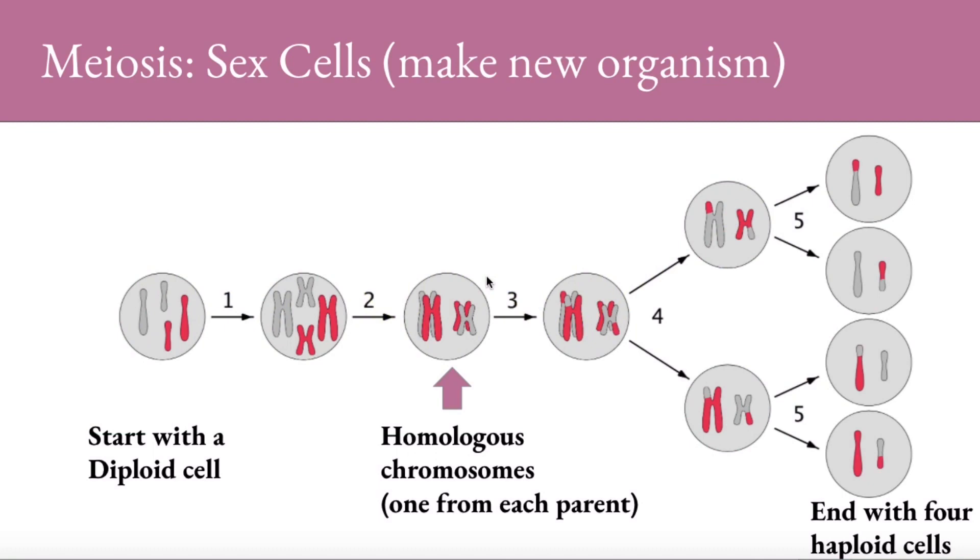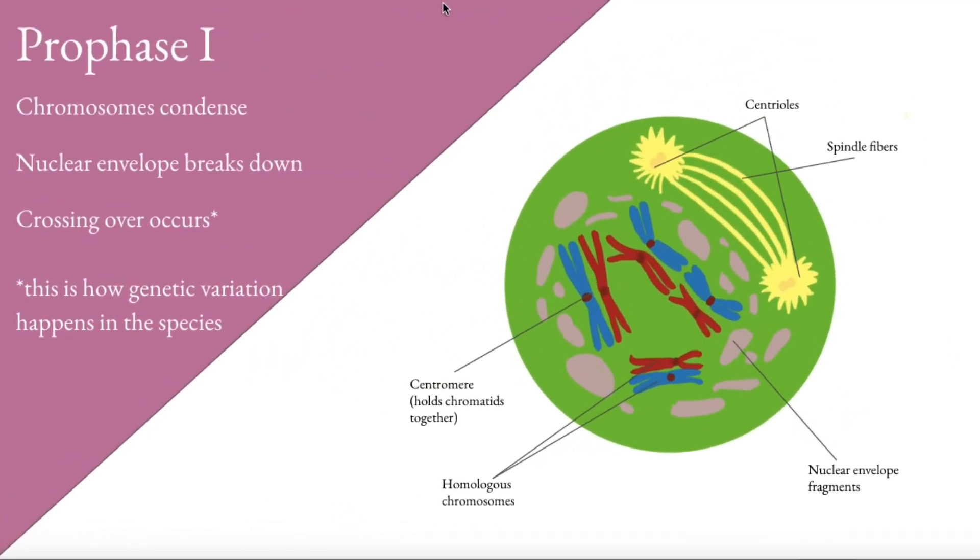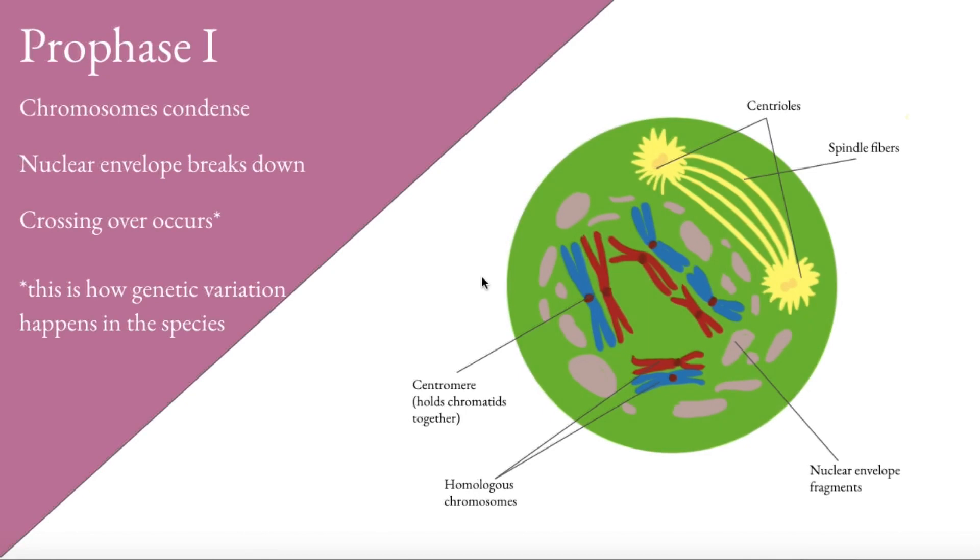Let's start with meiosis. This is how the sex cells are made. Remember the sex cells are used to make a new organism. In the humans, it is the sperm and the egg. You start with all the chromosomes, a diploid cell. By the end of the two divisions, you will have four cells, but they will be haploid with half the DNA as the original diploid cell.